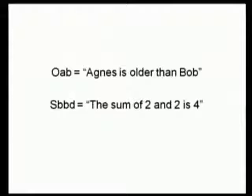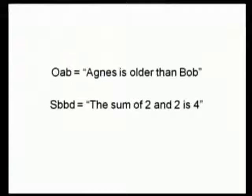When we have relationships, like 'Agnes is older than Bob,' we'll have more than one name. So OAB is 'Agnes is older than Bob,' with an obvious way of choosing what those letters mean. And SBBD is a triadic relationship — a relationship between three things. Using A for 1, B for 2, C for 3, D for 4, and so forth, a way of symbolizing 'the sum of two and two is four' is SBBD. You can have as many relata as you want in relationship names.